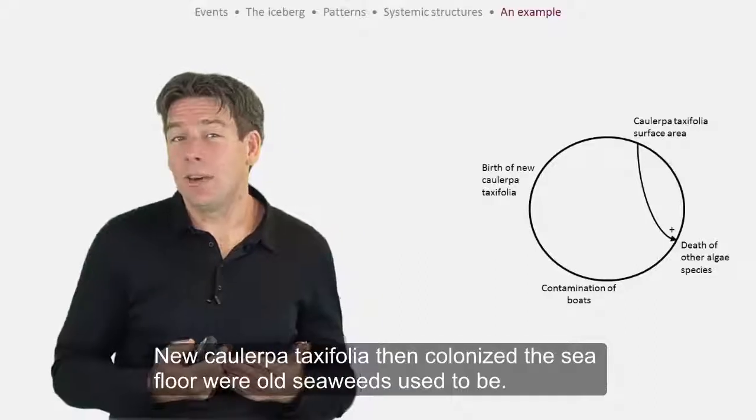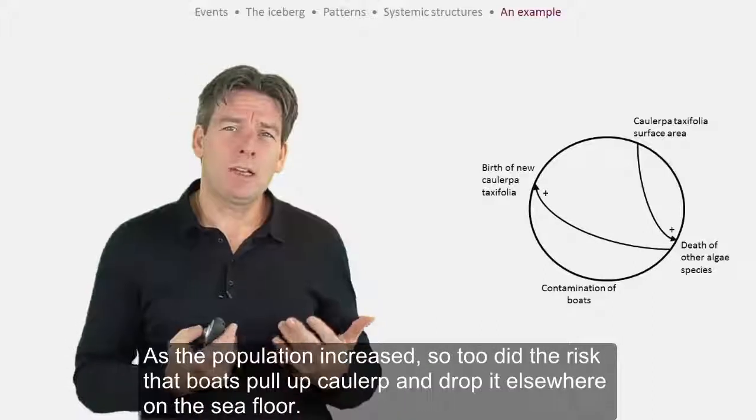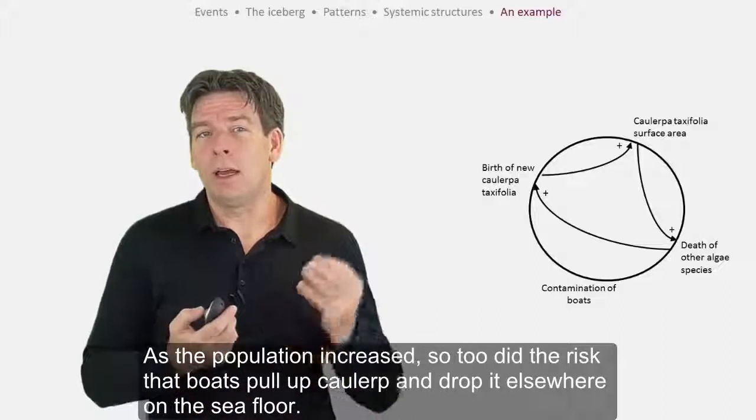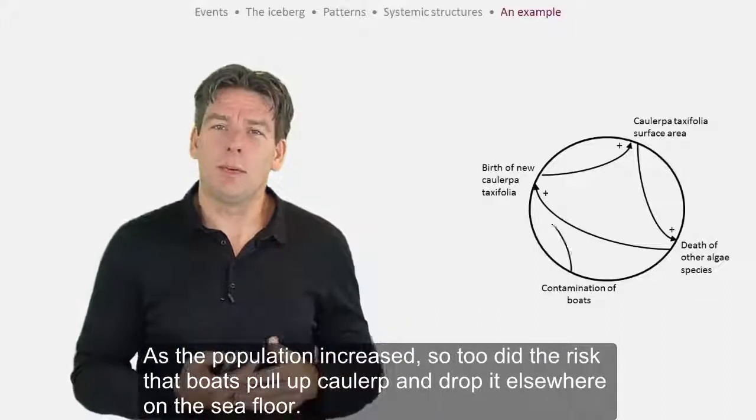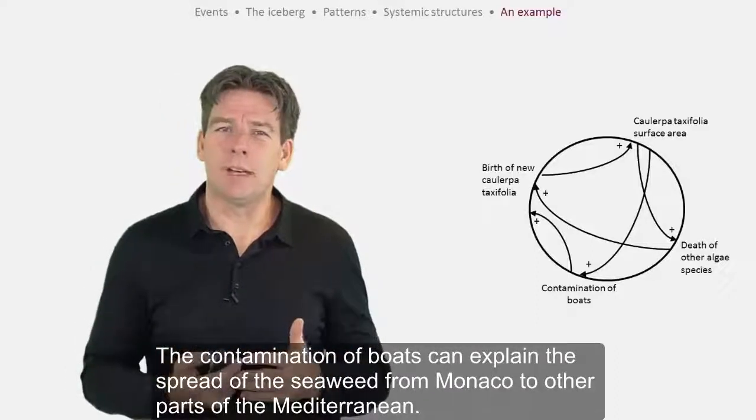New Caulerpa taxifolia then colonized the sea floor where old seaweeds used to be. As the population increased, so too did the risk that boats pull up the Caulerpa and drop it elsewhere on the sea floor. The contamination of boats can explain the spread of the seaweed from Monaco to other parts of the Mediterranean.